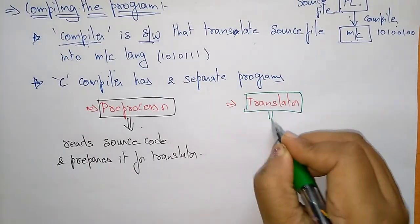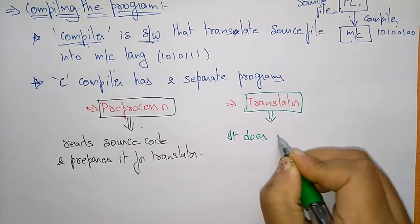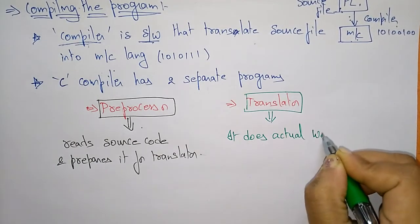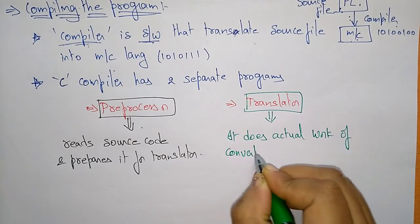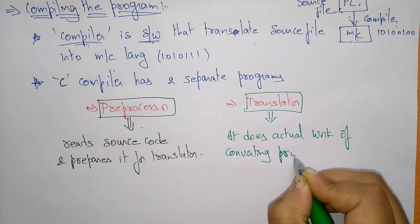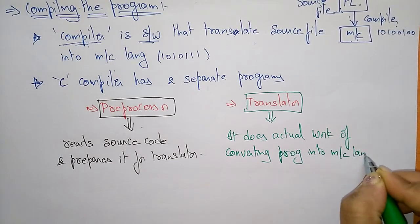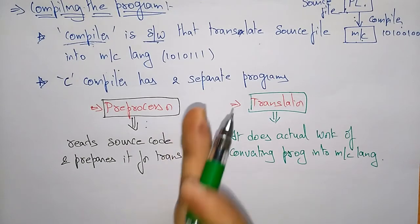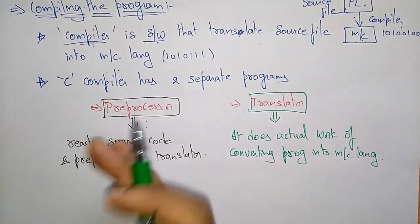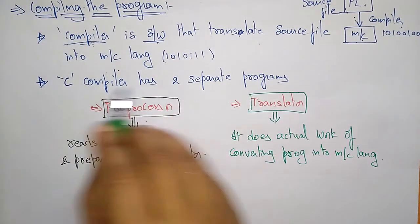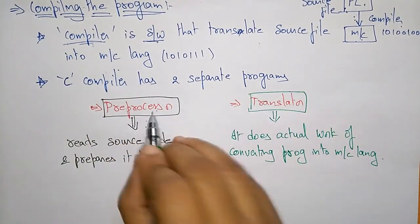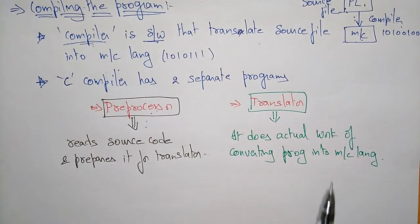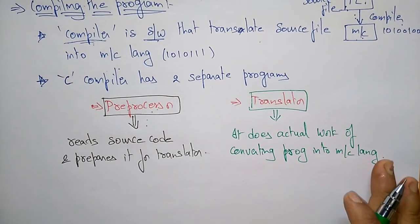The translator does the actual work. It does the actual work of converting the program into machine language. The preprocessor makes the source file ready to translate — it reads the data from the text editor — and then the C compiler divides into two steps: first the preprocessor work, then the translation. The translator is the main component; its work is converting the program into machine language.